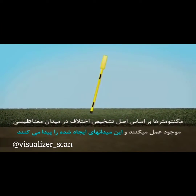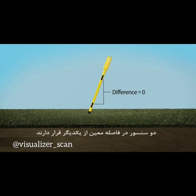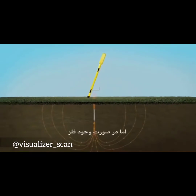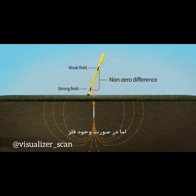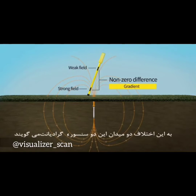Magnetic locators operate on the principle of detecting the difference in the magnetic field present at two sensors spaced a fixed distance apart. In the absence of a buried object, the field at both sensors is the same. The presence of an object results in a difference between the magnetic field at the top and the bottom sensors. That difference is called a gradient.